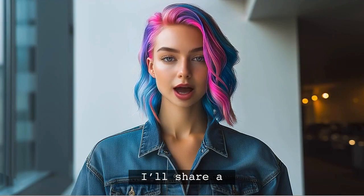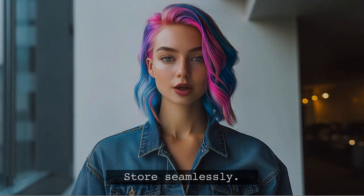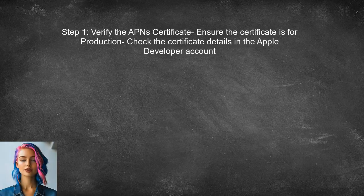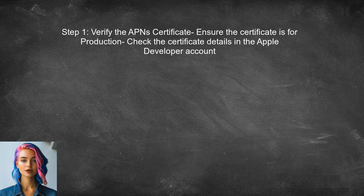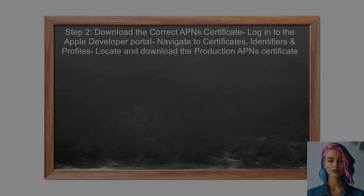At the end of this video, I'll share a valuable resource that will guide you through updating your app in the App Store seamlessly. To resolve the issue with the APN certificate, first verify that you are using the correct certificate for the production environment — checking that the certificate is indeed for production and not for development. Next, download the correct APN certificate from the Apple Developer Portal by logging in and navigating to Certificates, Identifiers, and Profiles, then locating the production certificate for your app.